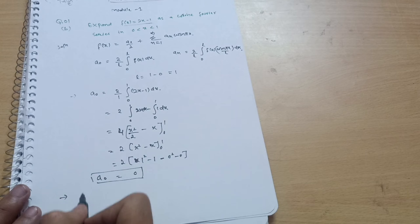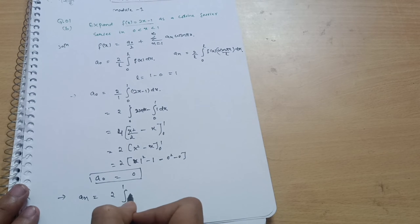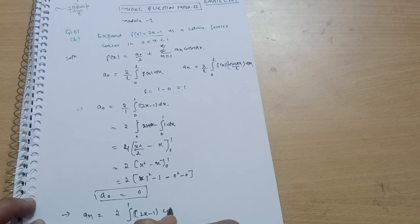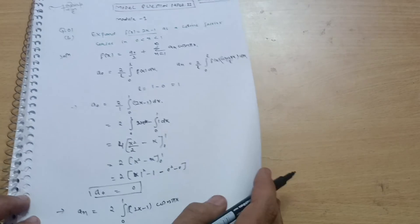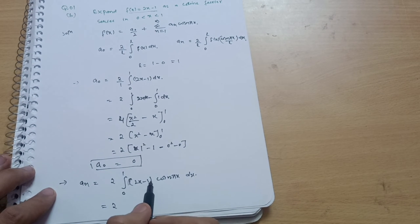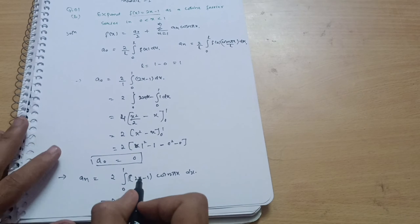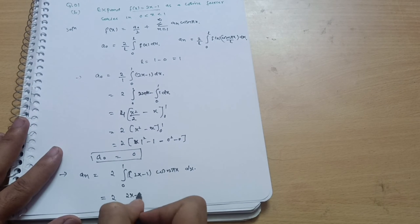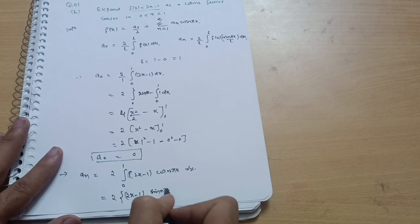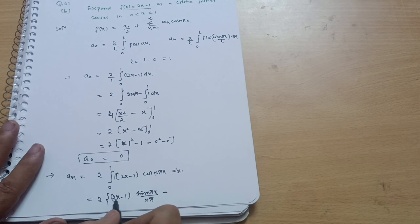Now calculate aₙ. aₙ = 2 × integral from 0 to 1 of (2x − 1) cos(nπx) dx. We apply Bernoulli's rule of integration, as discussed in the previous lecture. Keep (2x − 1) as it is, and integrate cos(nπx) to get sin(nπx)/(nπ).